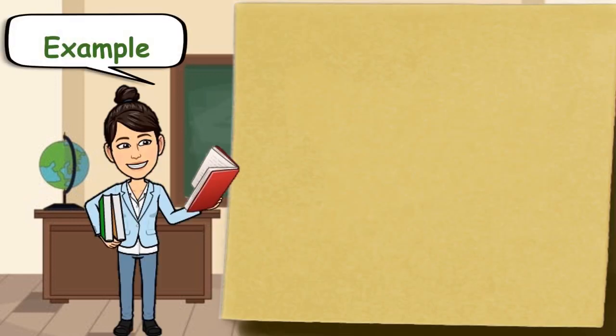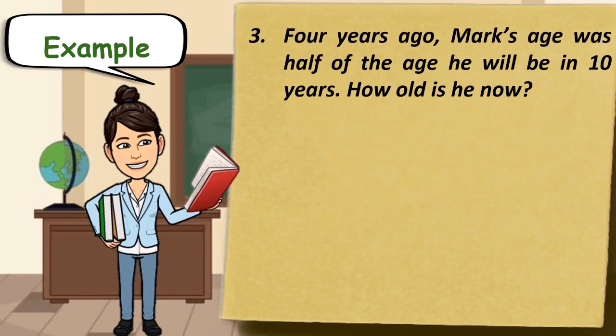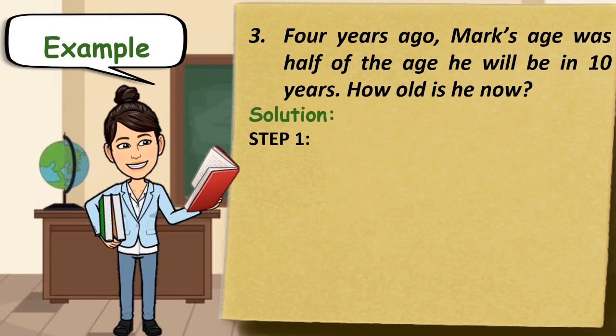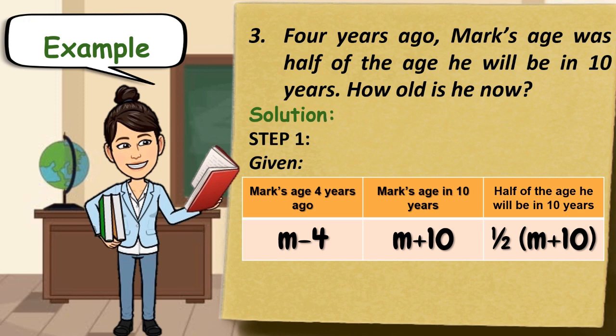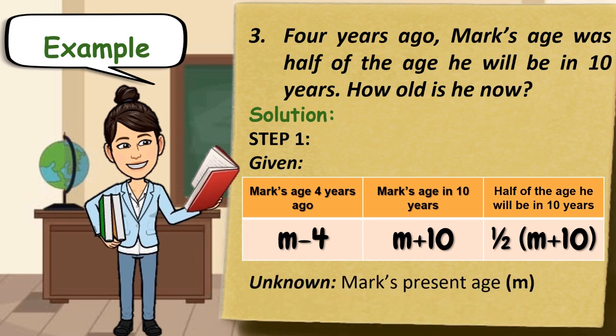Example number 3. Four years ago, Mark's age was half of the age he will be in 10 years. How old is he now? Step 1: we will use a table to represent our given. Mark's age 4 years ago will be represented by M minus 4. Mark's age in 10 years will be M plus 10. Half of the age he will be in 10 years will be represented by 1 half times the quantity of M plus 10. Our unknown quantity is Mark's present age, represented by M.